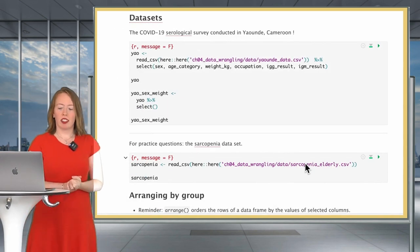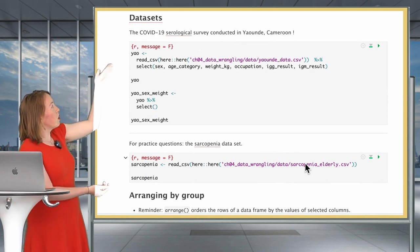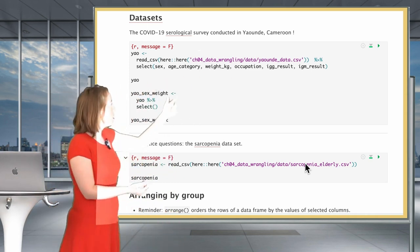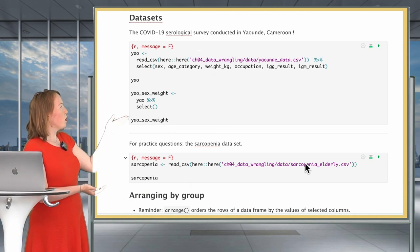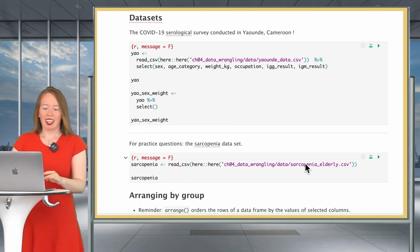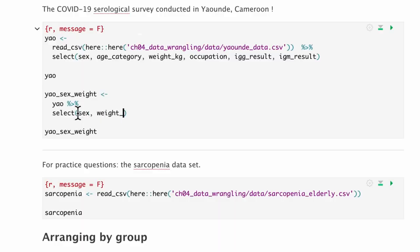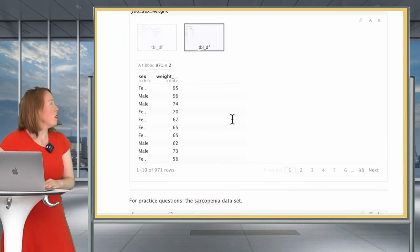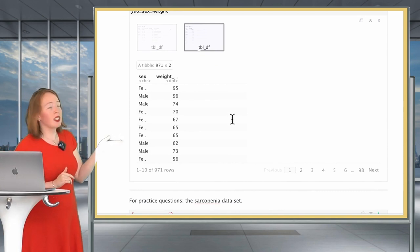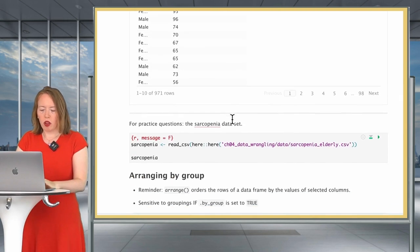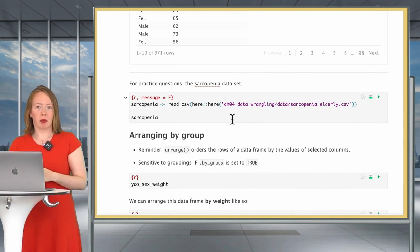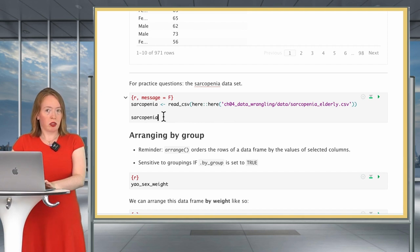Our data sets of today are data sets that you are already familiar with. We'll be using the COVID-19 data set from Yaoundé Cameroon. We're going to select some of the variables of this big data set. And we're going to make, to start with, a small subset which will be using only the sex and the weight variable.